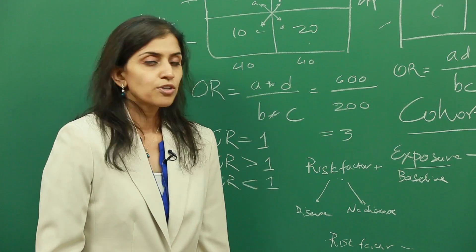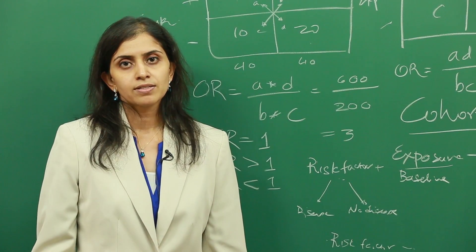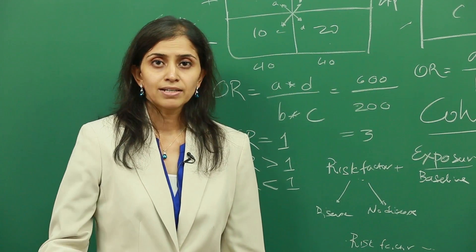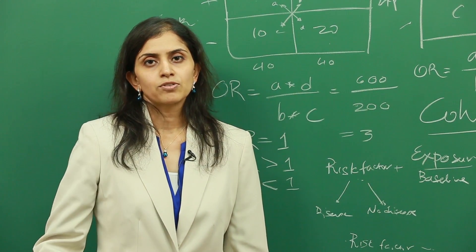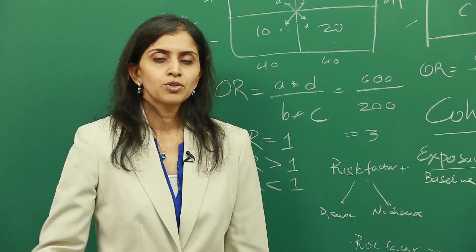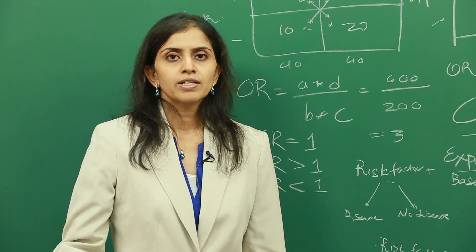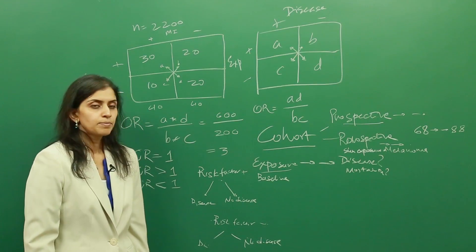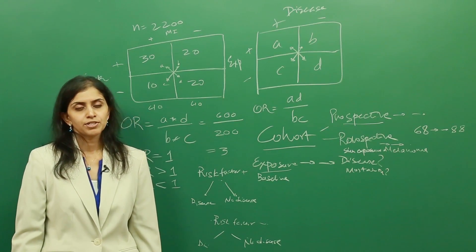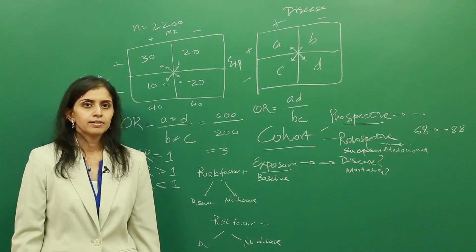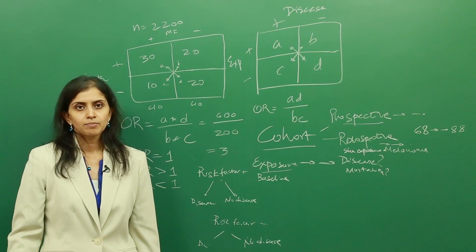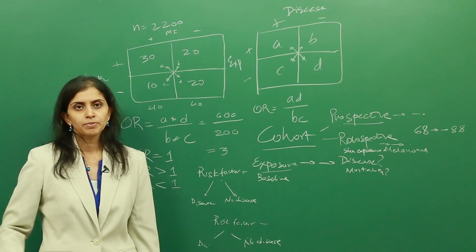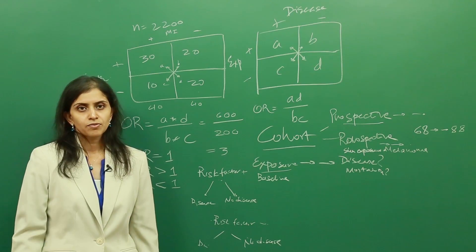There has to be a selection of a comparison group, just as with the case control study where you had cases and controls that were matched. In a prospective or retrospective cohort study going forward, you have to have a comparison group to see what happens if these subjects were not exposed. Then there has to be follow-up. You have to keep following up with the patients. They might come into the hospital or the clinical setting. You might take repeated measurements over a very long period of time. And then the analysis of the data has to occur.